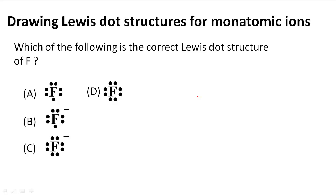Drawing Lewis dot structures for monatomic ions. In this practice problem it says which of the following is the correct Lewis dot structure of F negative? So the F anion. This means that F has gained a valence electron.